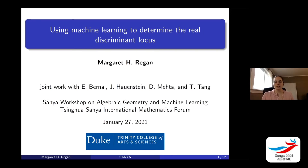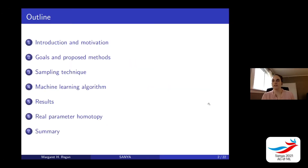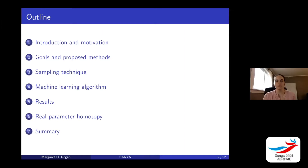which is a concept in algebraic geometry. This is joint work that I did with Degasch, Edgar Bernal, John Hauenstein — who is my advisor at Notre Dame — and Ting Ting, who was also a postdoc at Notre Dame and now is in California at a faculty position. As an outline: I'll give motivation on why we use machine learning and what we use the discriminant locus for, how we go about solving this problem, a new sampling technique, the machine learning algorithm results, and an application into something called a real parameter homotopy.